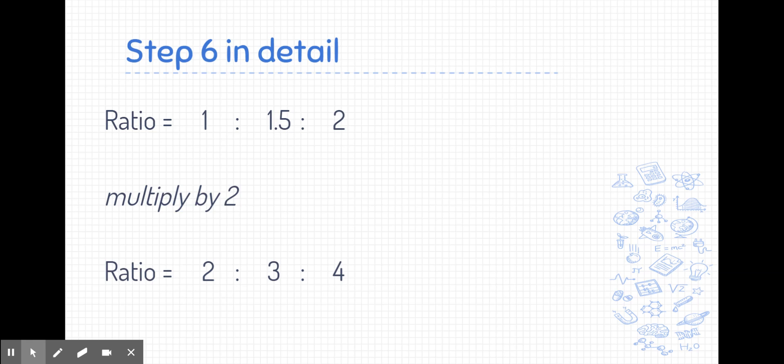1 times 2, 2. 1.5 times 2, 3. 2 times 2, 4. So a 1 to 1.5 to 2 ratio is the same as a 2 to 3 to 4 ratio. Now, at this point, I stop because now I have the simplest whole number ratio. This step is not required in every example, but is often required when you can't see the whole number ratio just by looking at a ratio with decimals.